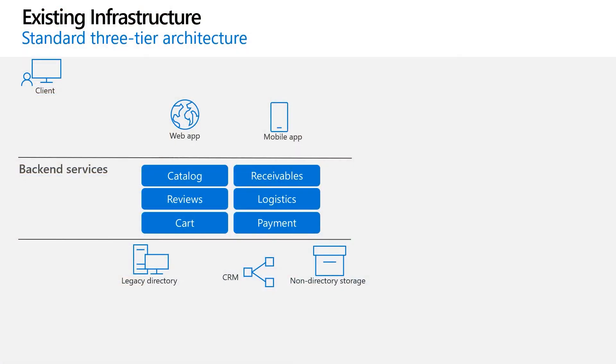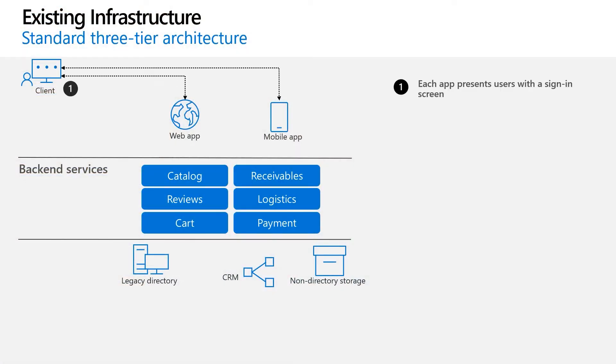A good place to start is with an understanding of your current application infrastructure, how the system works today, and what needs to be changed. Let me describe a common customer scenario as a reference before explaining what to change and how. If you have a web app or a mobile app, you will have a back-end service that the front-end client talks to. Here, we have a three-tier architecture, and this pattern may resemble your case as well.